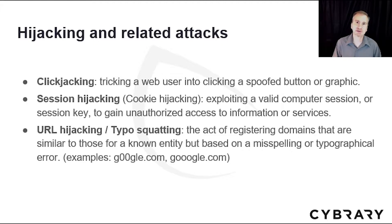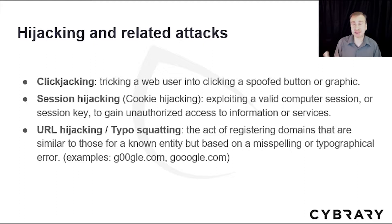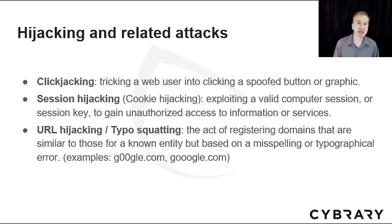The third type is URL hijacking, also known as typosquatting, where the attacker registers a domain similar to a well-known domain, such as Google. Some people might not notice the three O's in Google — you can see some examples on screen.